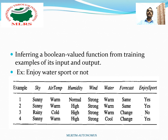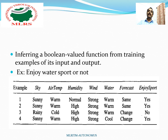We start our discussion on concept learning by taking the example of enjoy water sport or not. This example consists of six attributes: sky, air temperature, humidity, wind, water, and forecast. It also consists of three positive examples and one negative example.